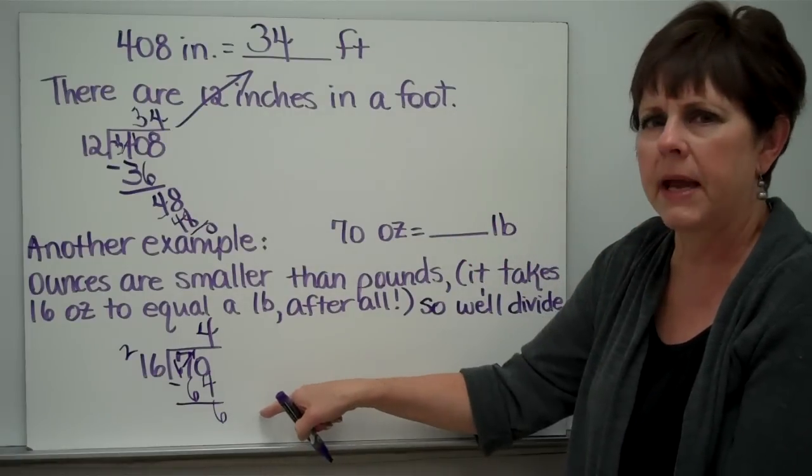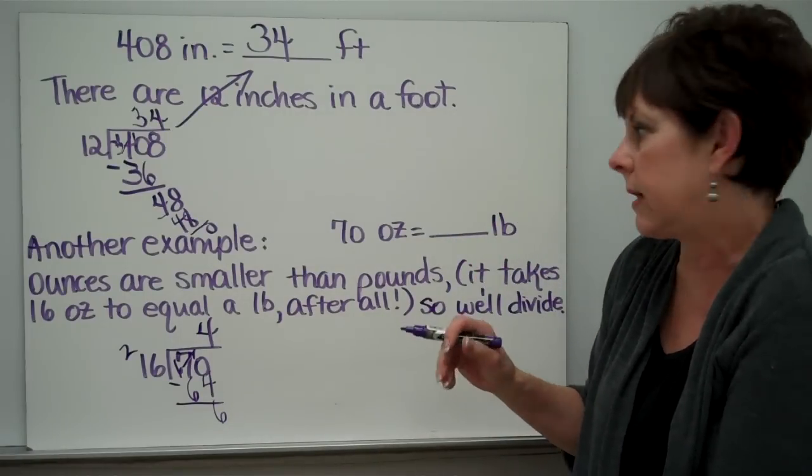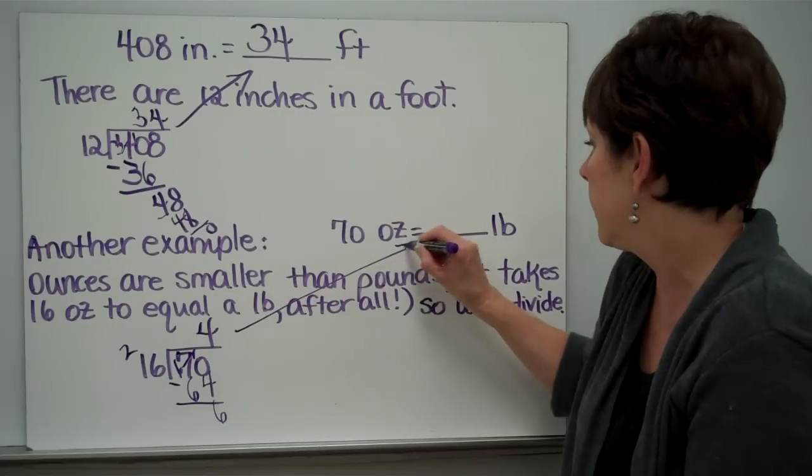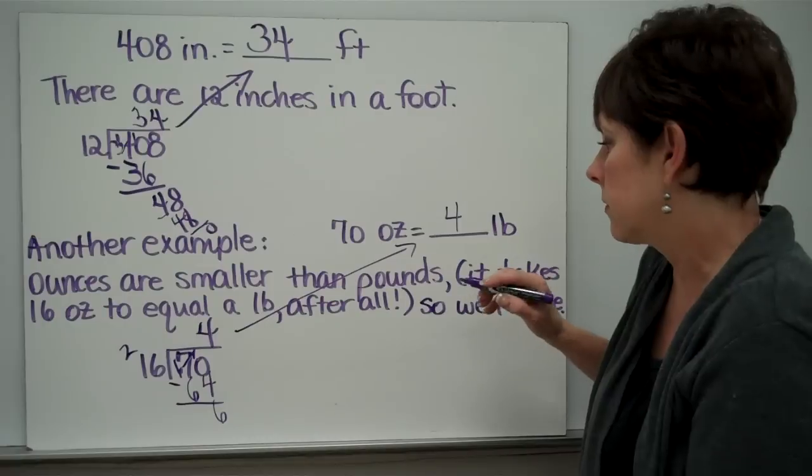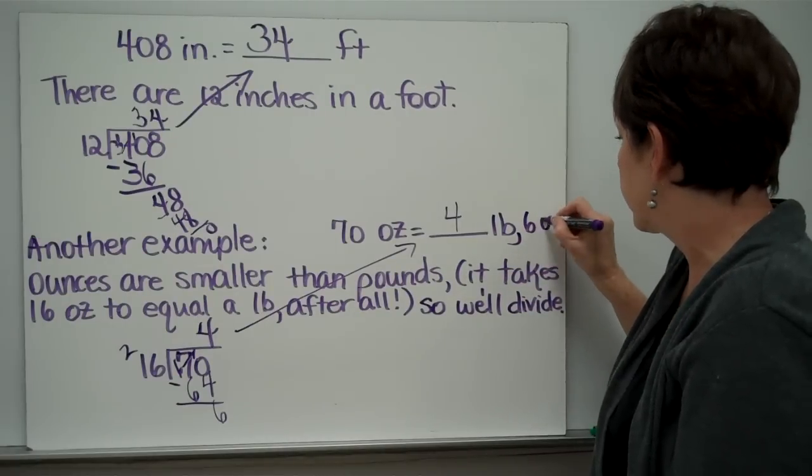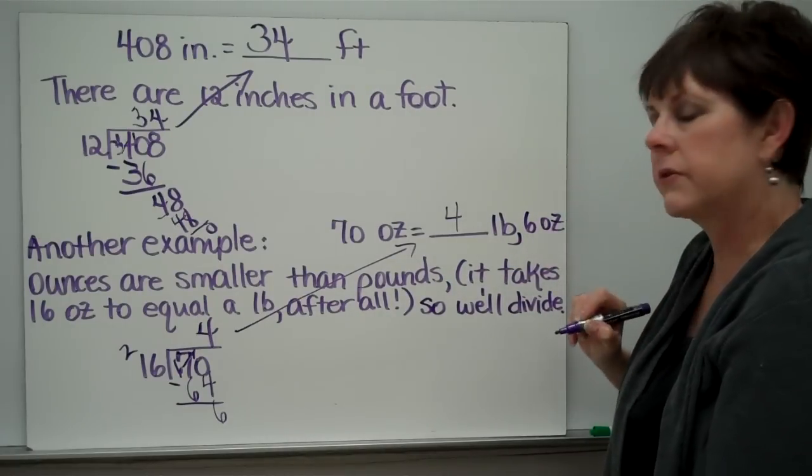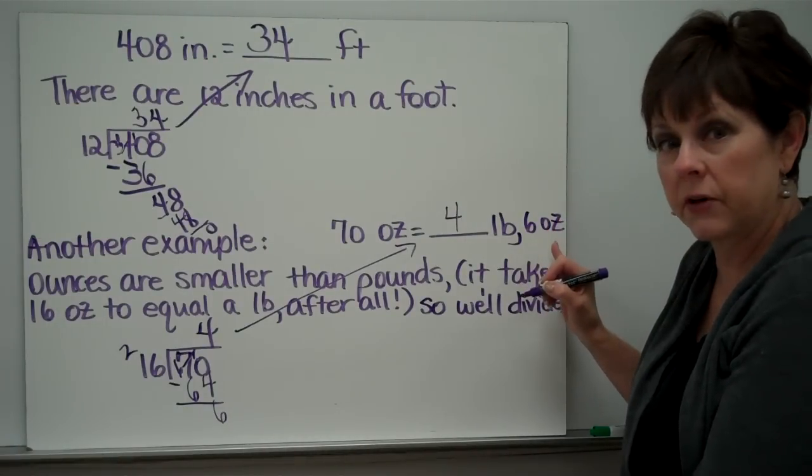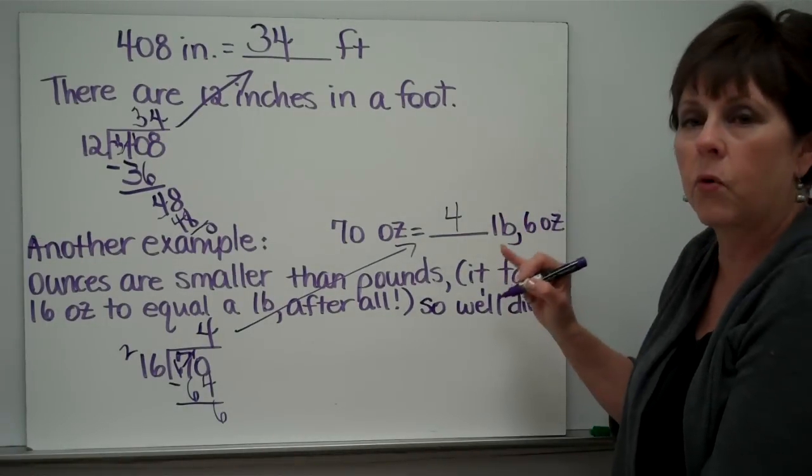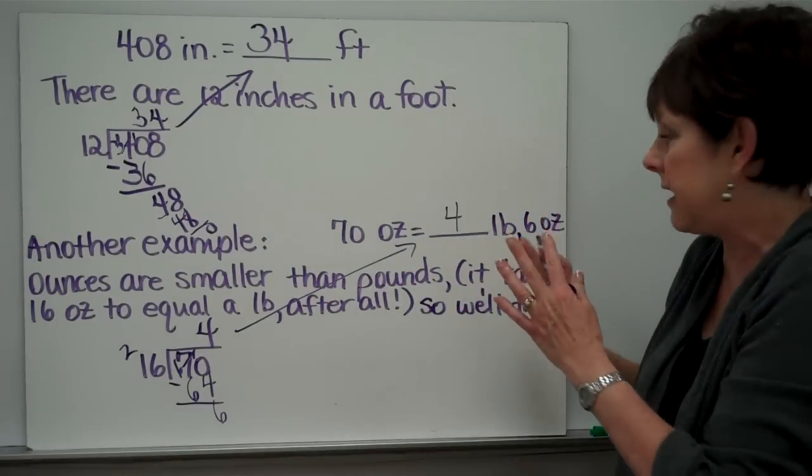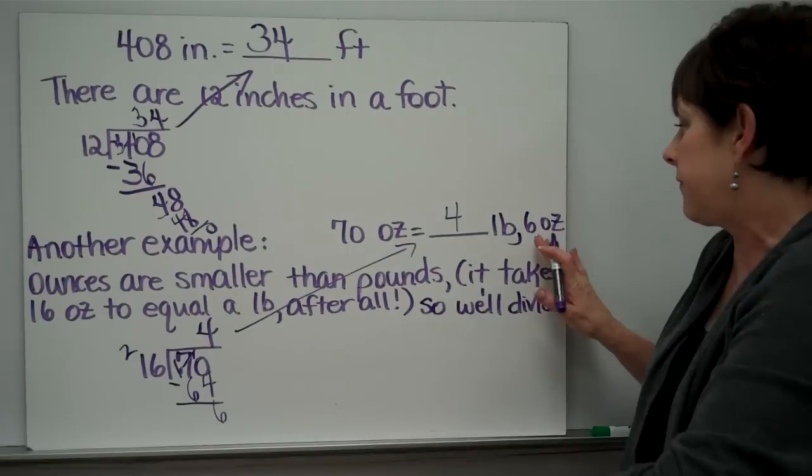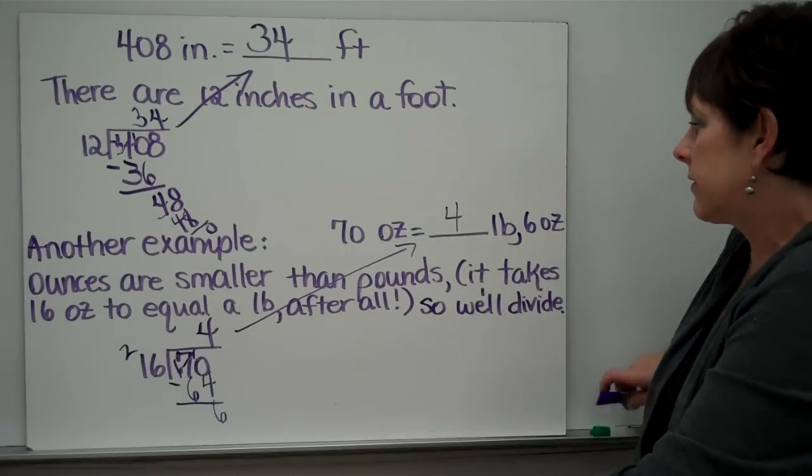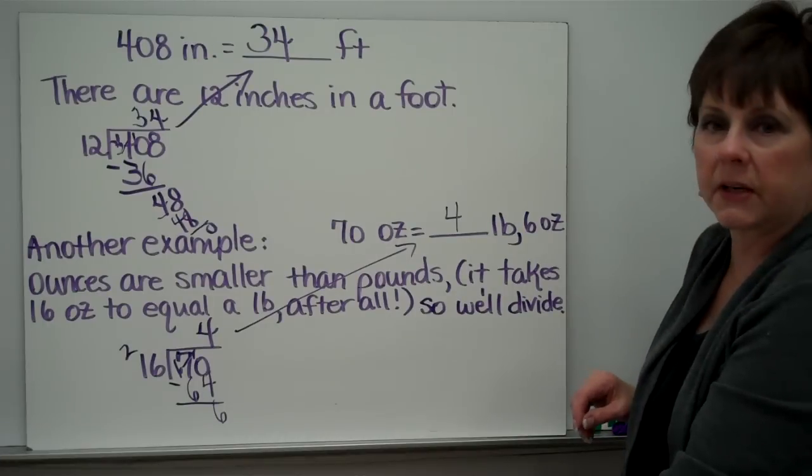Now we've got a remainder, and you may think, I didn't know we could have remainders. You can. What this means is this would be 4 pounds and 6 ounces. We would actually place this into our answer because it's not evenly divided. There's a little bit left, and you would place that into your answer. So 70 ounces is 4 pounds, 6 ounces.